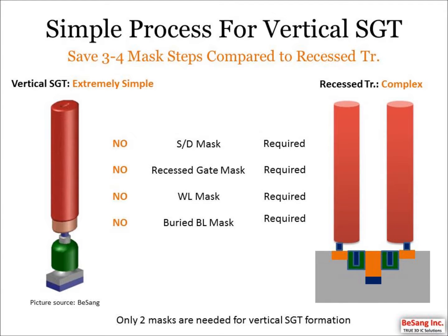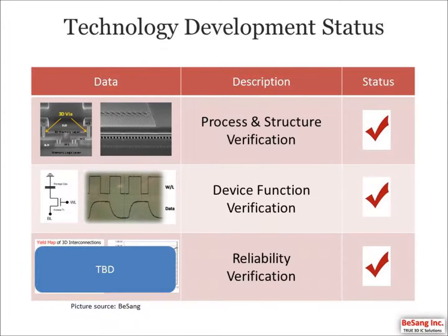However, vertical SGT is extremely simple compared to the recessed transistor. Vertical SGT needs only two masks, saving three to four mask steps. For example, no source and drain mask, no recessed gate mask, no word line mask, and no buried bit line mask are needed for the vertical transistor. If you have the impression that 3D Super DRAM is expensive to make, that is not right. Process and structure are successfully verified, and device functionality and reliability are also verified.